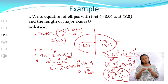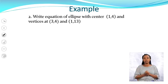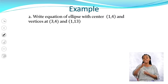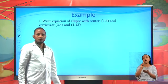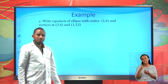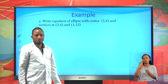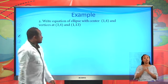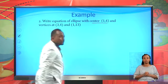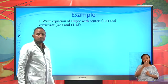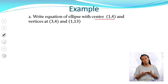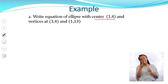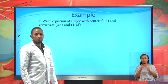Now let's continue to the next example. Write the equation of the ellipse with center (1, 4), vertices at (3, 4) and (1, 13). We have the center, and we need to find a and b. To determine a, b, and the axis direction, let's sketch a rough graph.